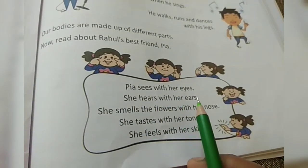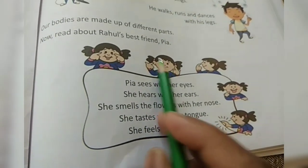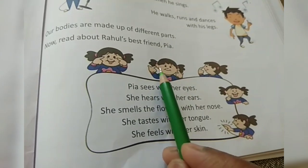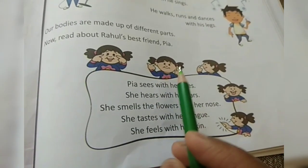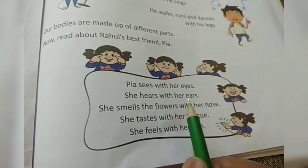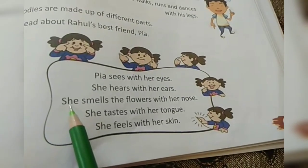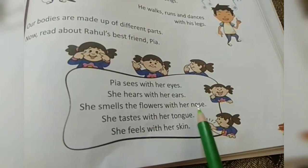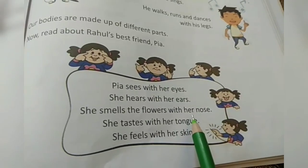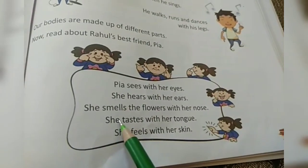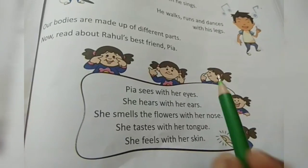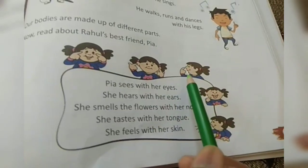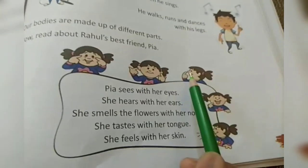She hears with her ears. Pia hears with her ears — we can also hear with our ears. Then, she smells the flowers with her nose. How can we smell anything? We can smell anything with our nose. Pia is smelling the flower with her nose.